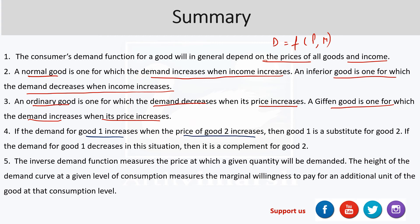If the demand for good one increases when the price of good two increases, then good one is called a substitute for good two. If the demand for good one decreases when the price of good two is increasing, then good one is a complement for good two.